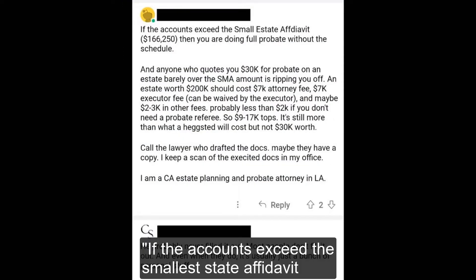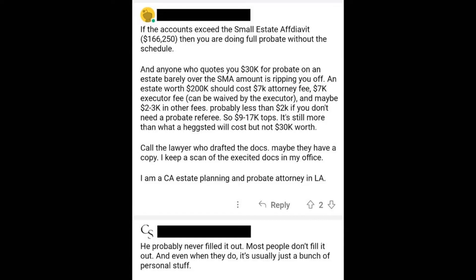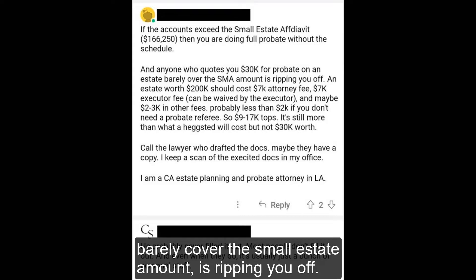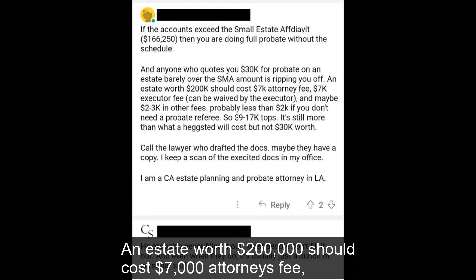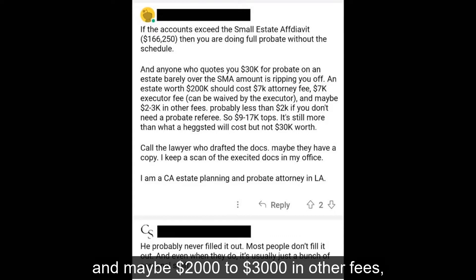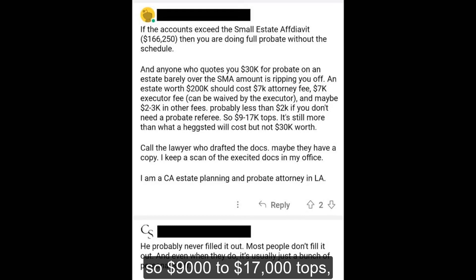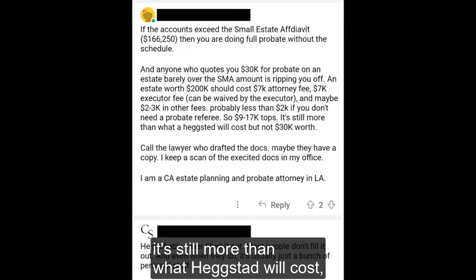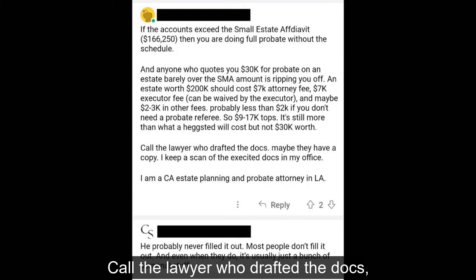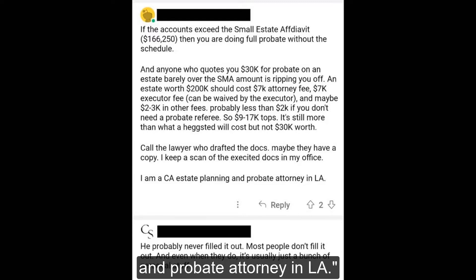One commenter noted: If the accounts exceed the small estate affidavit threshold of $166,250, then you're doing full probate without the schedule. And anyone who quotes you $30,000 for probate on an estate barely covering the small estate amount is ripping you off. An estate worth $200,000 should cost $7,000 in attorney's fees, $7,000 executor fee saved by the executor, and maybe two to three thousand in other fees — probably less than $2,000 if you don't need a probate referee. So nine to seventeen thousand tops. Call the lawyer who drafted the docs; maybe they have a copy. I keep a scan of the executed docs in my office — a California estate planning and probate attorney in LA.